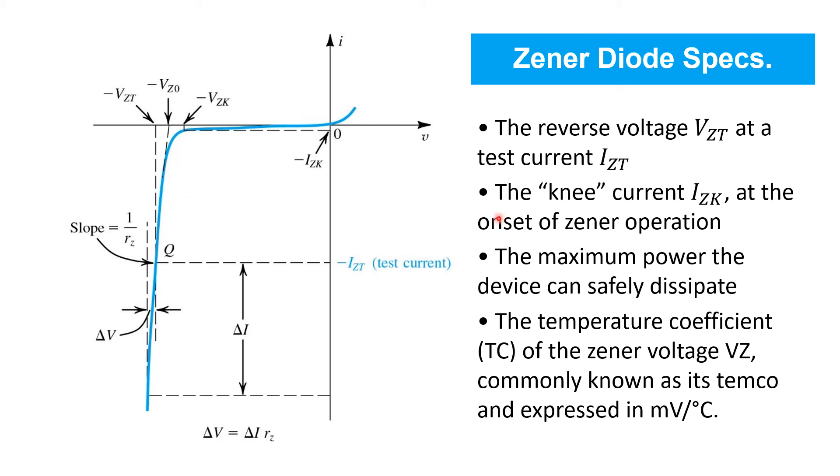Also often specified is the knee current, IZK on this plot, at the onset of zener operation. So before that level of reverse current, we essentially just see reverse leakage to the diode, but beyond that current, the curve turns more steeply downward and the reverse voltage becomes relatively constant.